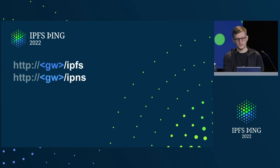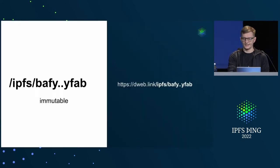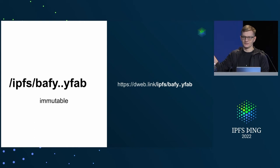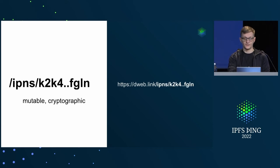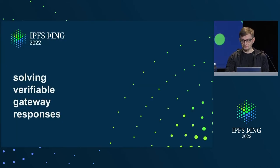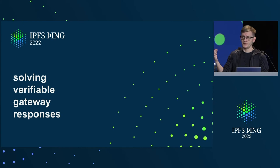When we talk about gateway APIs, there's no traditional API — there are just content paths. You request content paths from the gateway and you get the data. By default the gateway does the work for you: even if it's UnixFS it will deserialize it, and if you use IPNS or another mutable pointer it will resolve that too. It can also provide origin isolation per content route in a browser context. The interesting thing that happened recently is that we finally solved the problem of verifying the response the gateway sends.